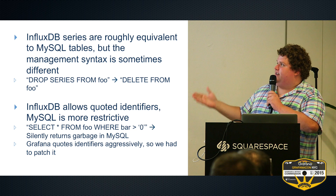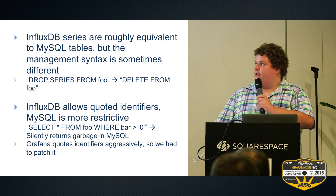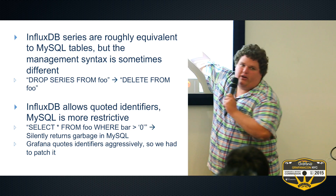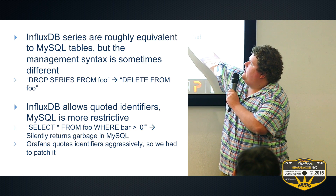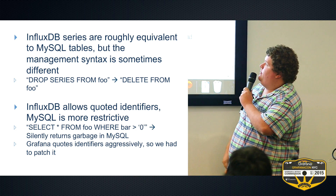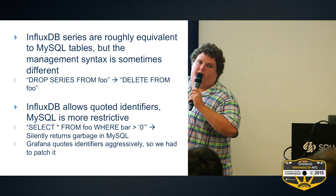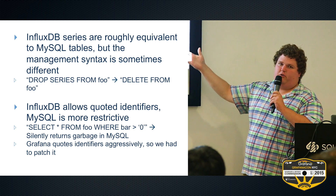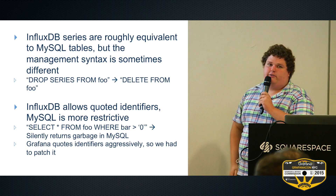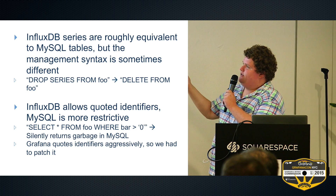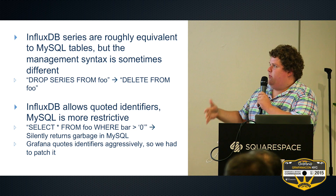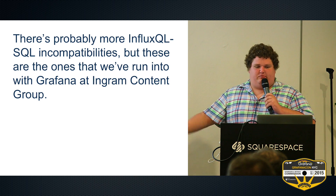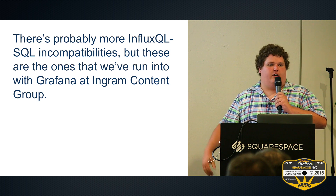One of the bigger issues is that InfluxDB allows quoted identifiers whereas MySQL doesn't. Grafana quotes identifiers aggressively — it will single-quote a value like zero. InfluxDB will unquote this and parse it properly as you'd expect, whereas MySQL tries to do a type conversion between the quoted zero and your column and silently returns garbage. Quoted identifiers is actually the only thing we had to patch out to be able to use this. There are probably more incompatibilities, but these are the ones we ran into with our production system.